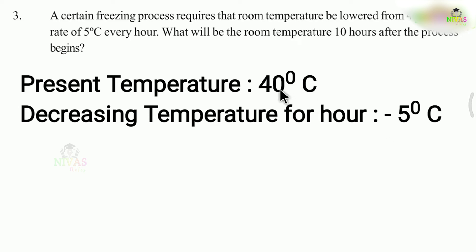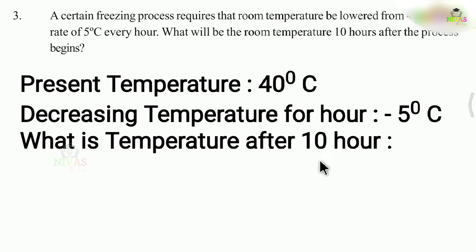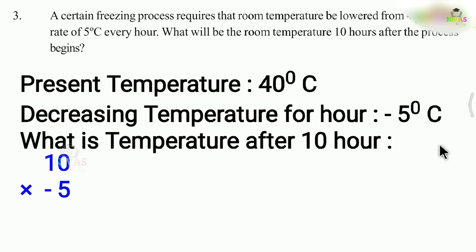It is 40 degrees Celsius. So when we start freezing for 10 hours, the room temperature up to 10 hours — when we start, this is 10 into minus 5. 10 into minus 5, the answer is minus 50. In 10 hours, the freezing is minus 50.